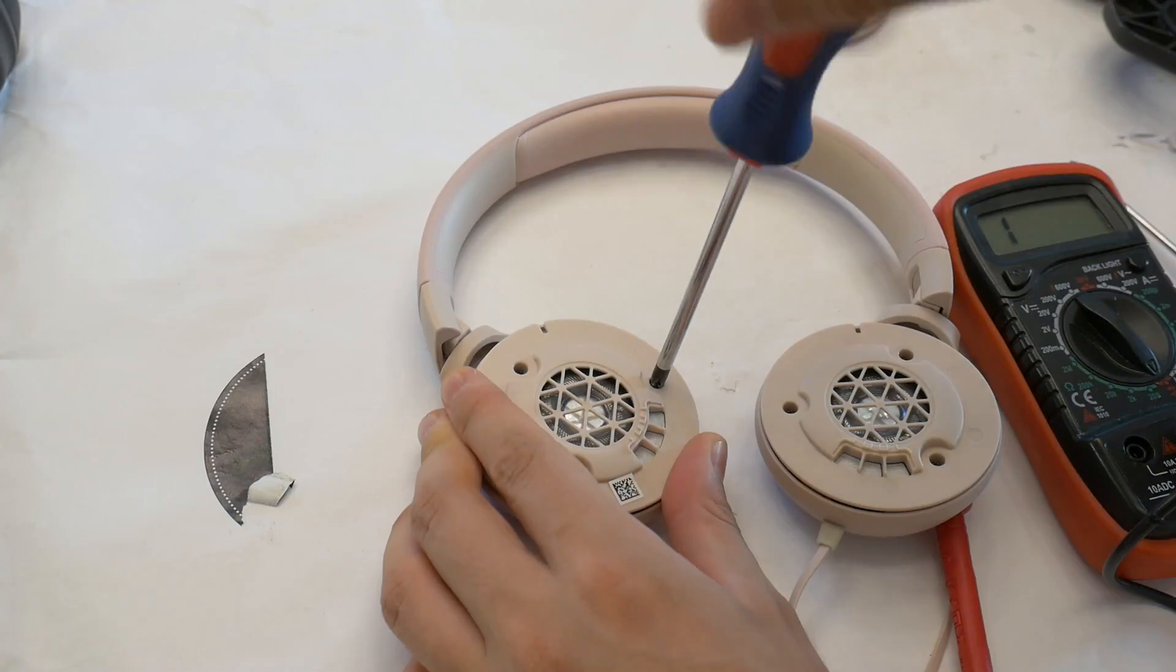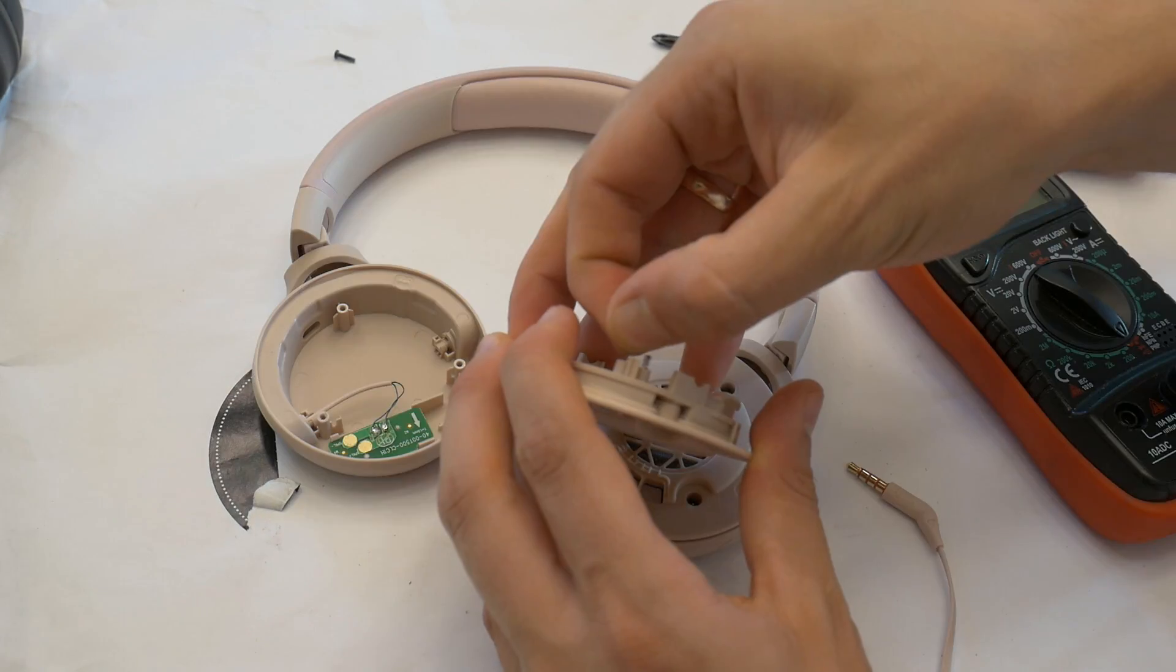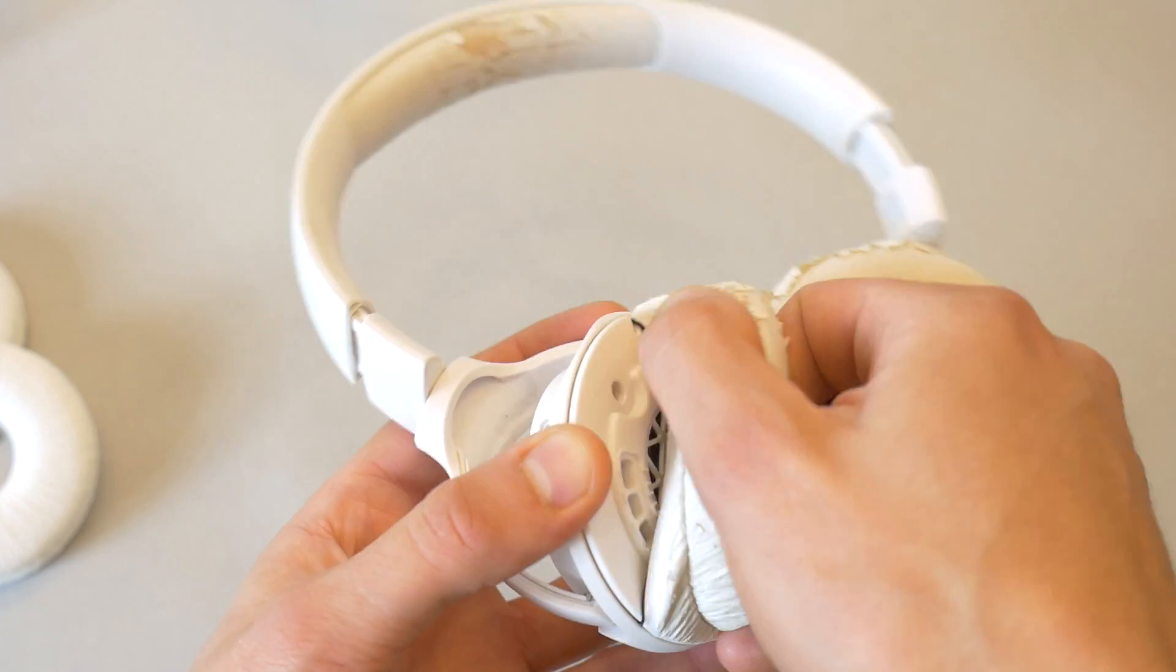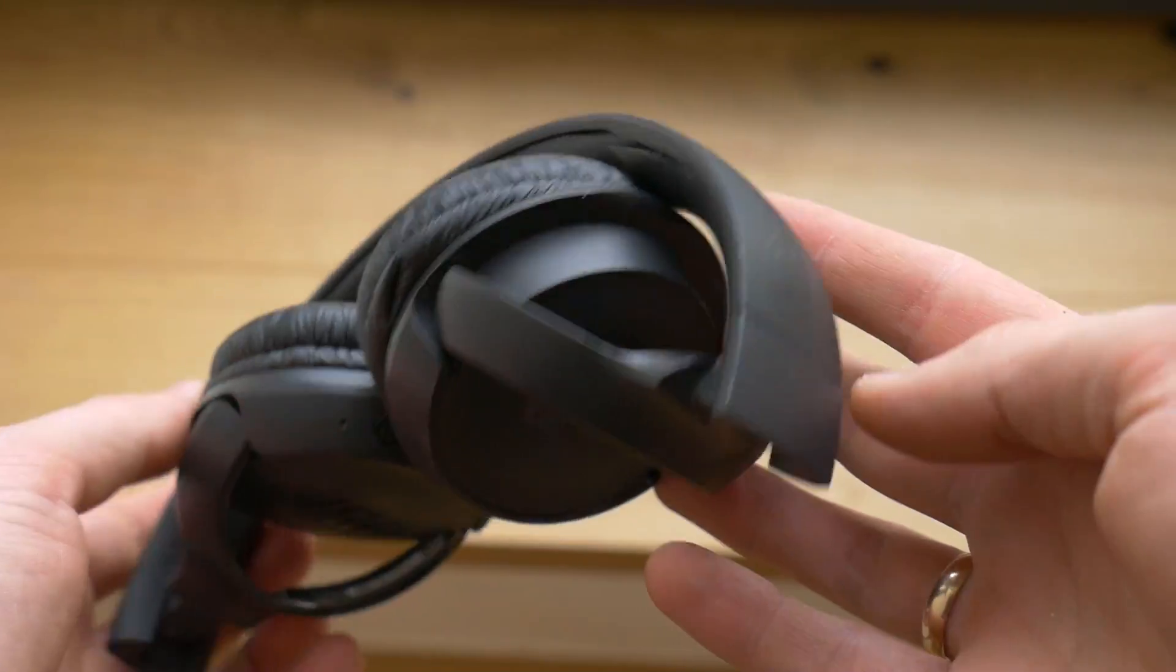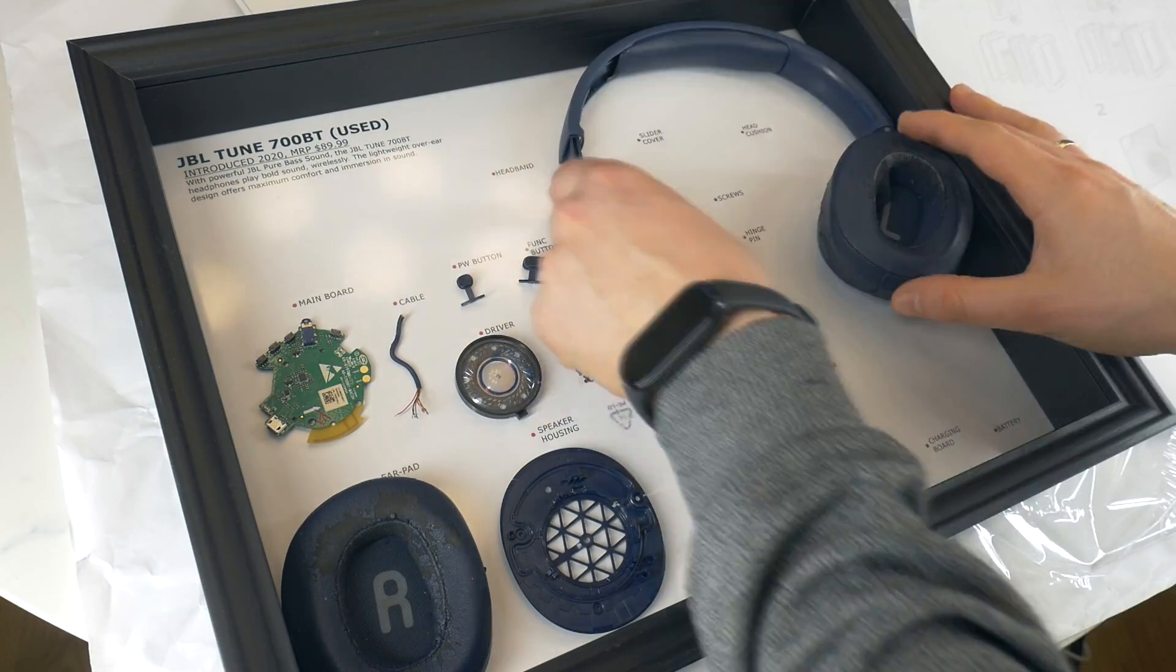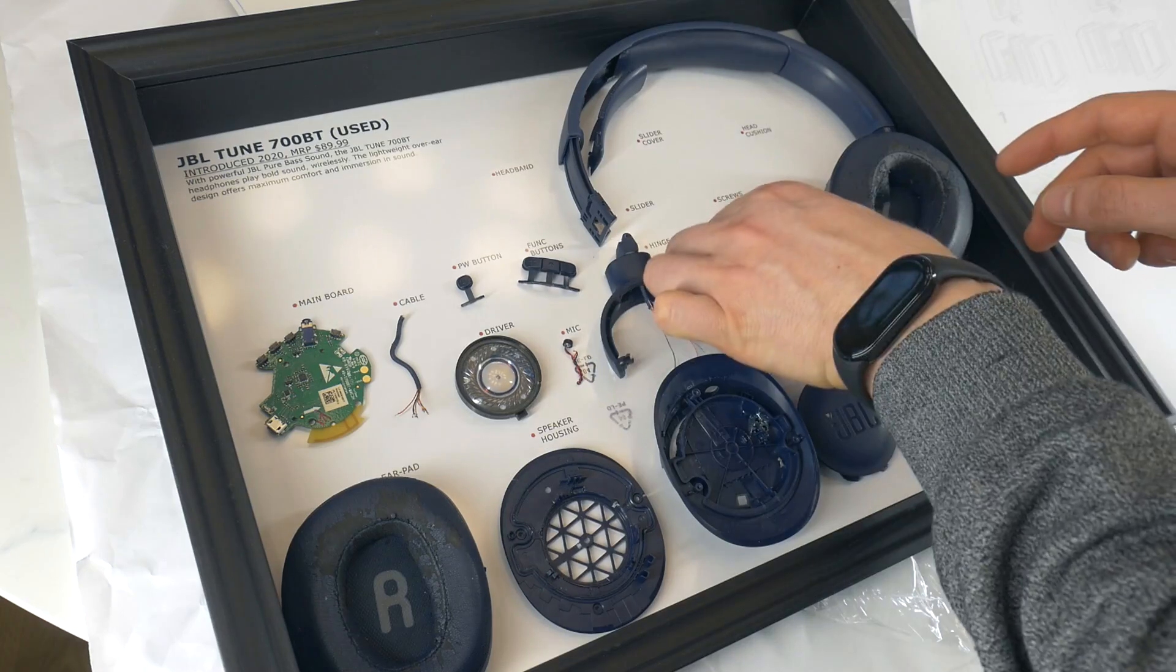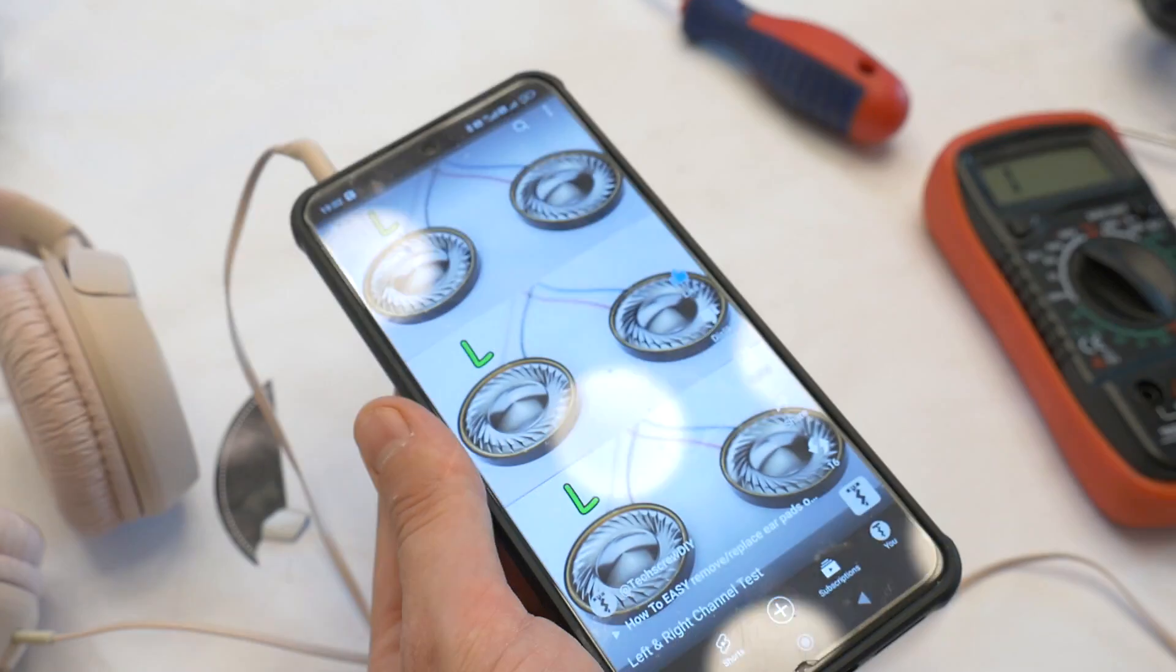Hello, today I'm going to show you how to fix JBL Tune headphones when one side is not working. This tutorial will work for JBL Tune 500, Tune 600, and Tune 700 headphones, both wired and Bluetooth editions, when the right or left side is not working.